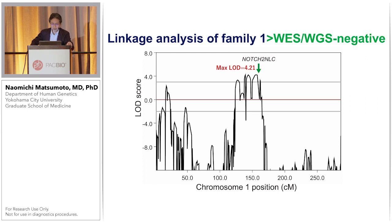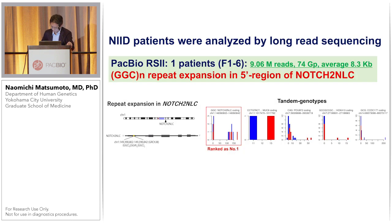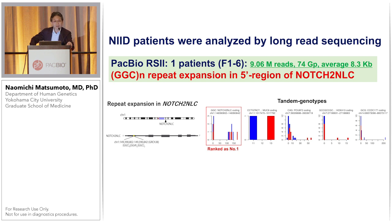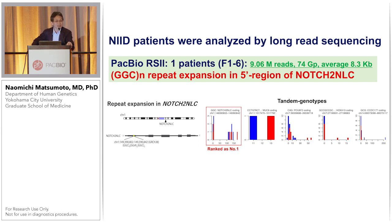Whole exome sequencing and whole genome short-read sequencing was totally negative. So we applied PacBio RS2 — it's old data, from Dr. Sone's group who had already analyzed these families using the very first PacBio sequencing system. They obtained 74 gigabytes of data with average read length of 8.3 KB. We applied Tandem Genotype to this family. Surprisingly, one of the genes showed GGC repeat expansion ranked as number one.